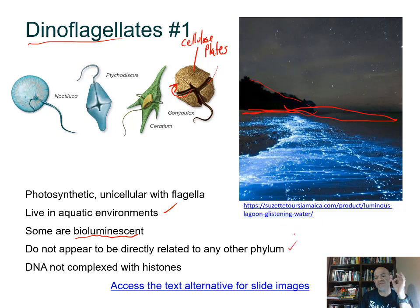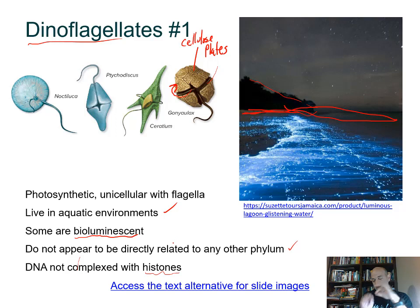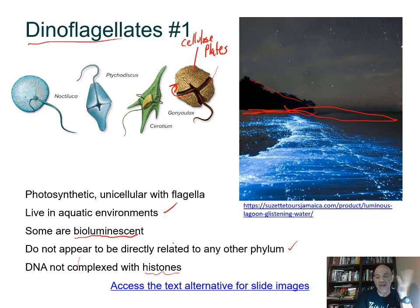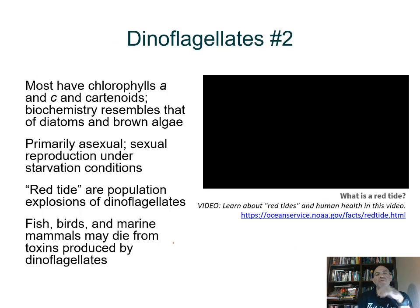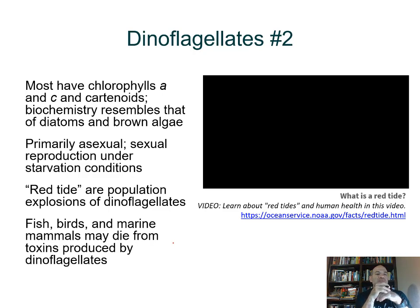This group has some peculiarities. Their DNA does not form the typical complex with histones — the protein that helps organize DNA into chromatin in eukaryotes. Most dinoflagellates have chlorophyll A and C — unlike land plants that have chlorophyll A and B — plus carotenoids, which give them a yellowish or orange color. Their biochemistry resembles that of diatoms and brown algae.